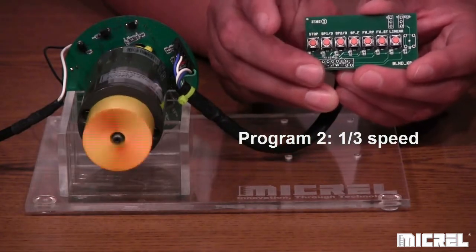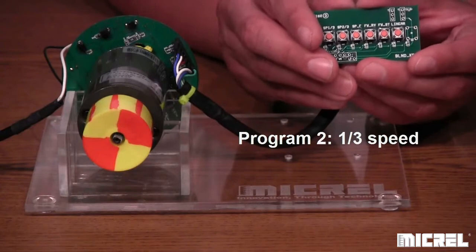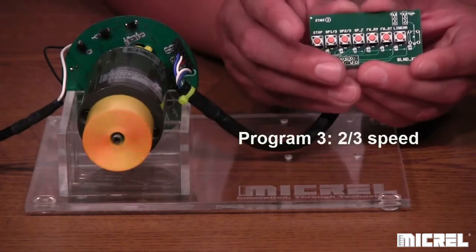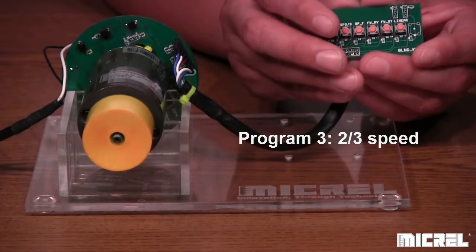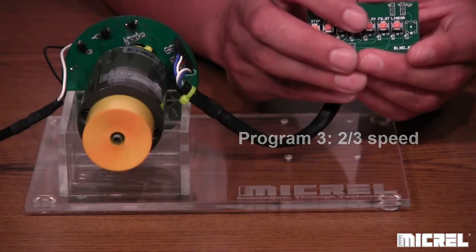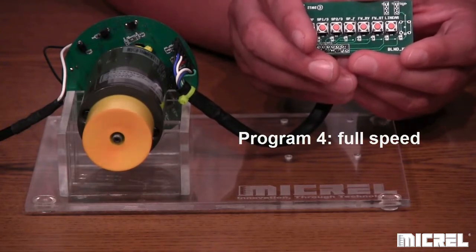The second one is one-third speed. So this is revolving around 1100 RPM. Two-thirds speed, which is going to be about 2200 RPM. And then full speed, which will be rotating about 3300 RPM.